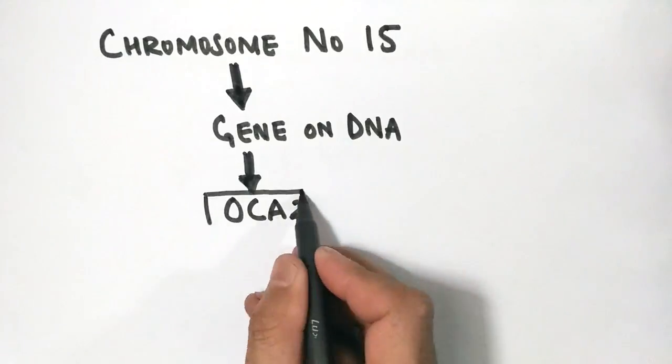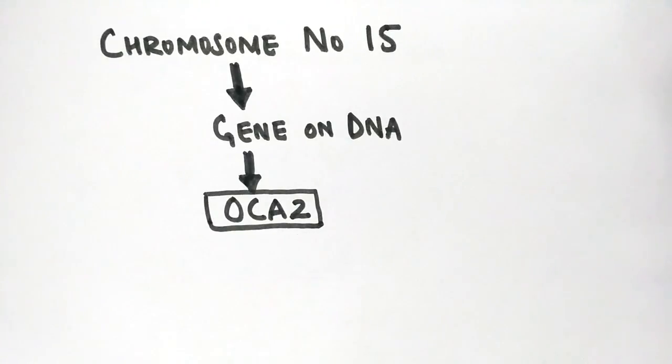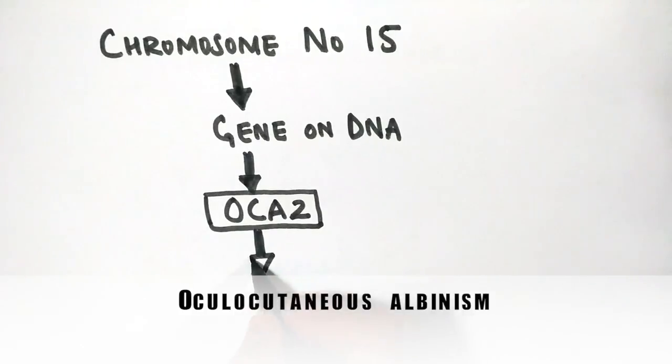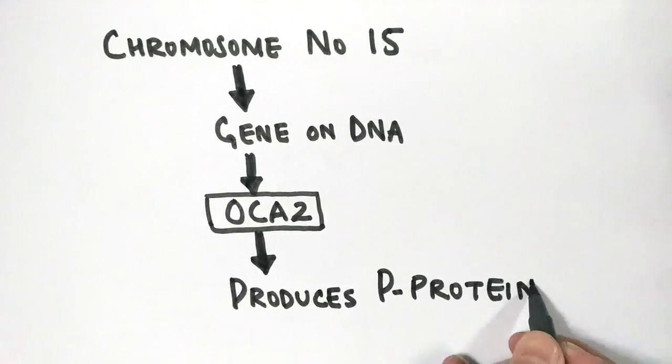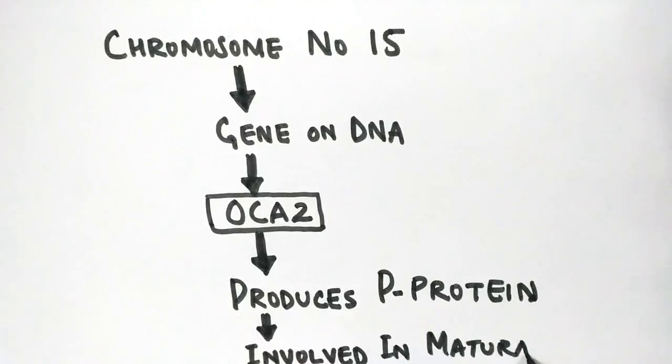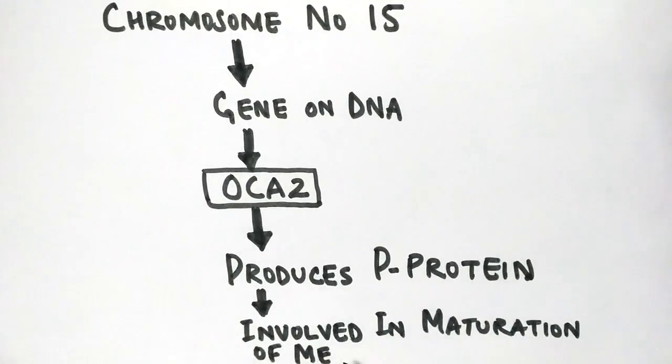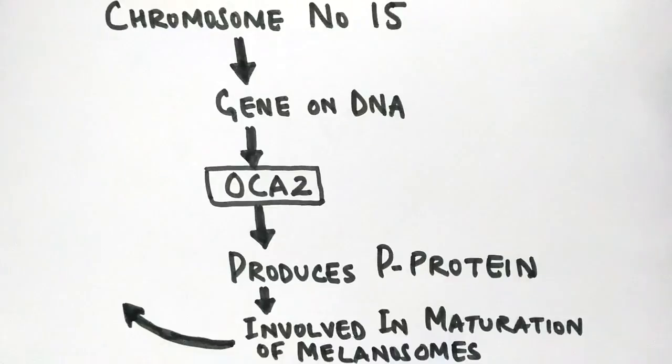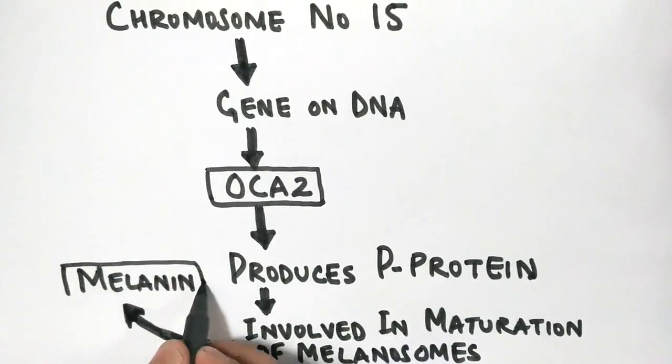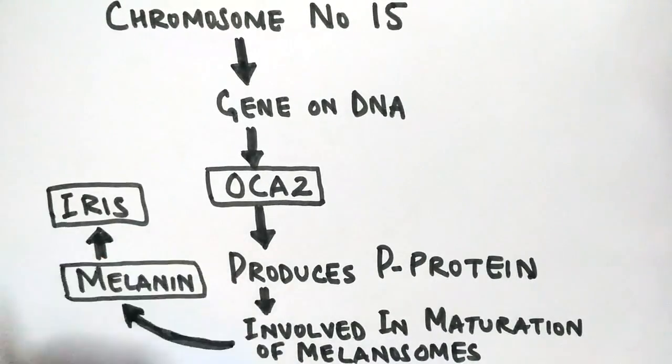This OCA2 gene produces a P-protein that's involved in the maturation of melanosomes, and these melanosomes finally produce melanin. This melanin is present in the iris, causing the pigmentation in it.